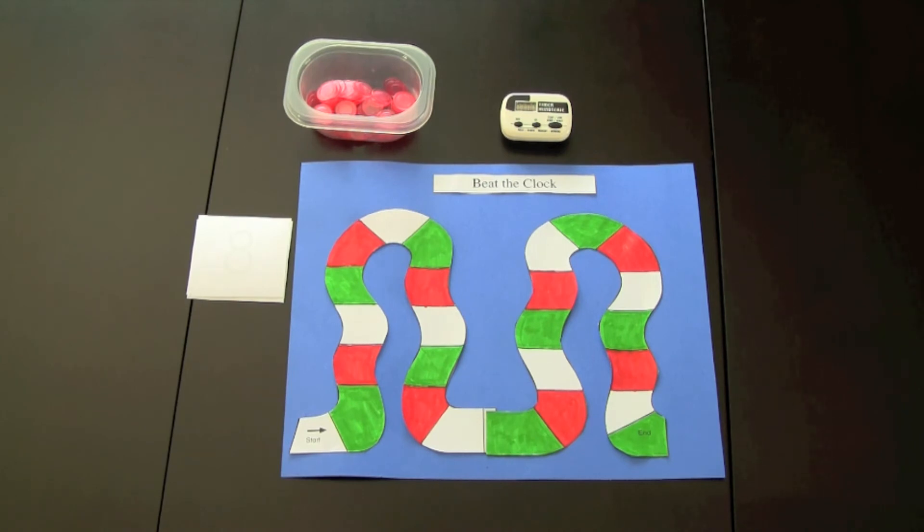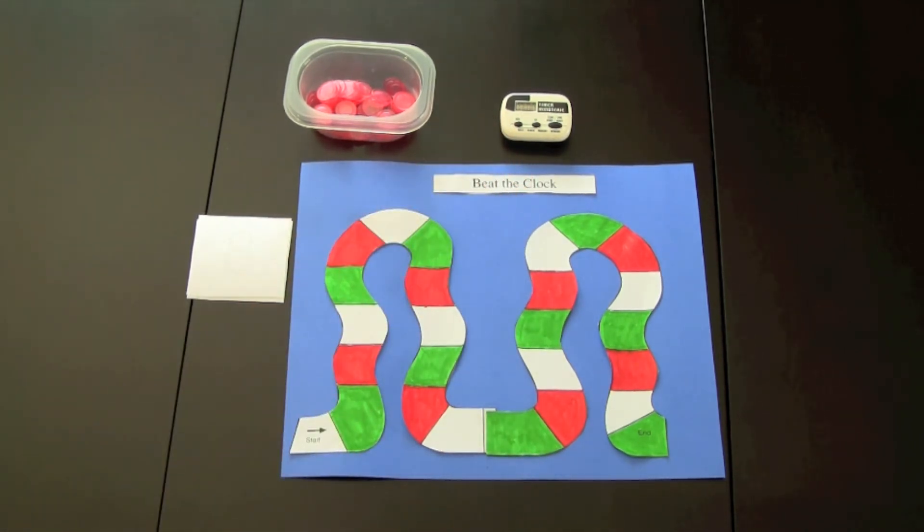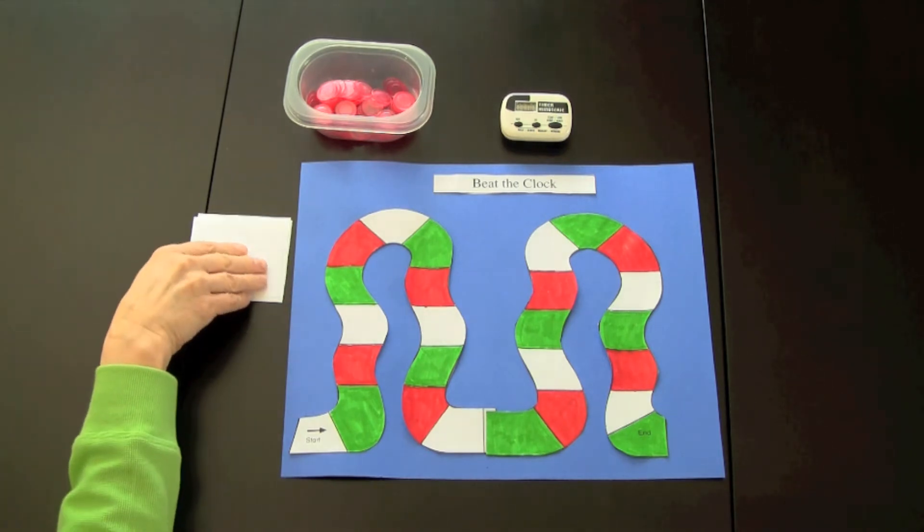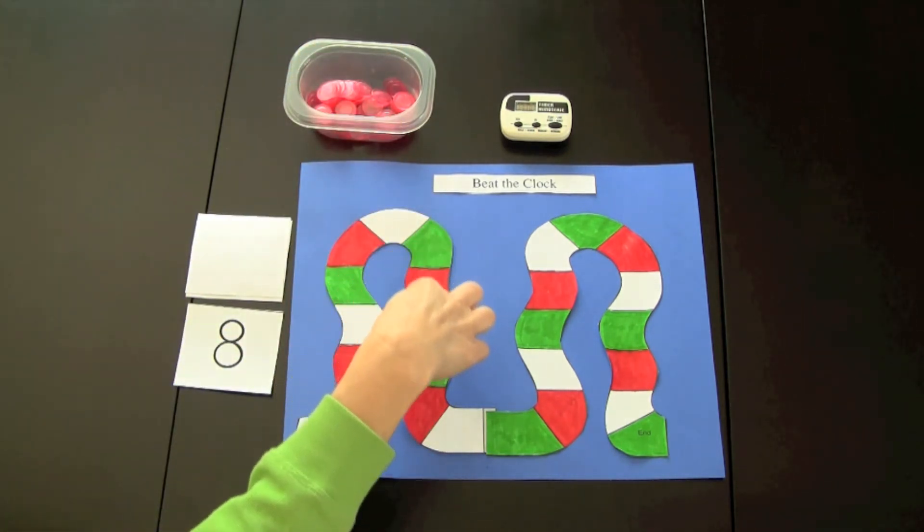This game is called Beat the Clock. The children would be taught how to set a timer and see if they could beat it. Player 1 would select a card. They have selected number 8, so they would place that many bingo chips on the game board.